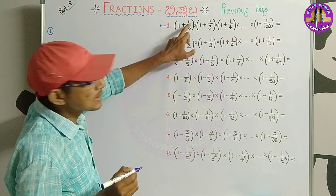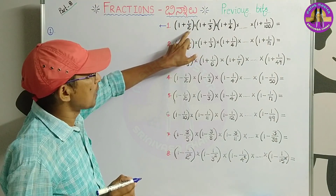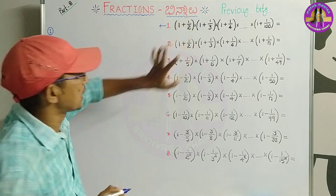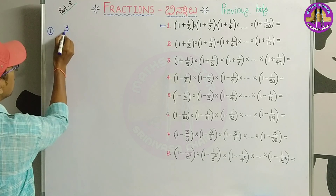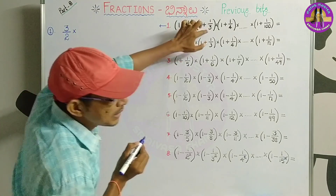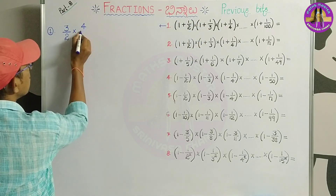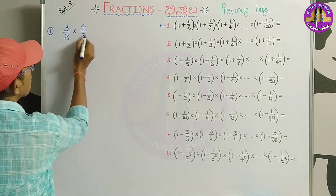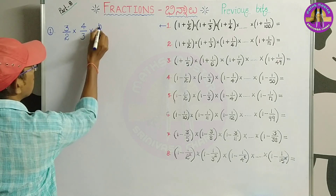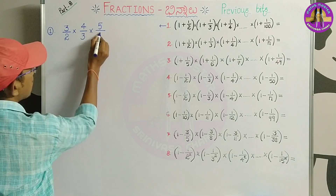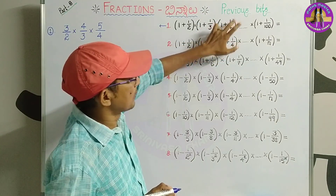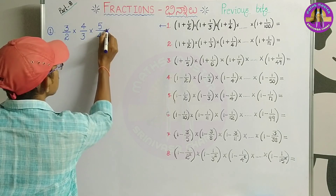For the product series: 1 plus 1 by 2 gives 3 by 2, into 1 plus 1 by 3 gives 4 by 3, into 1 plus 1 by 4 gives 5 by 4. Denominator 4, so 4 ones are 4 plus 1 gives 5 by 4, and so on.